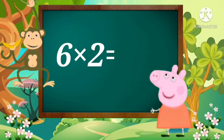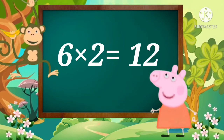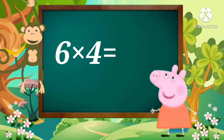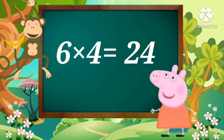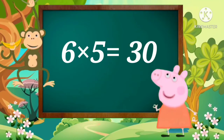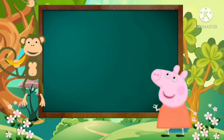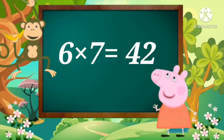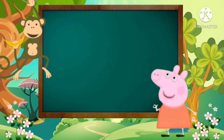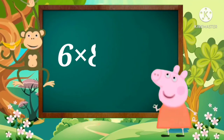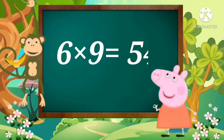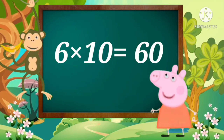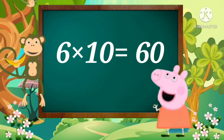Now let's repeat. Six ones are six. Six twos are twelve. Six threes are eighteen. Six fours are twenty-four. Six fives are thirty. Six sixes are thirty-six. Six sevens are forty-two. Six eights are forty-eight. Six nines are fifty-four. Six tens are sixty.